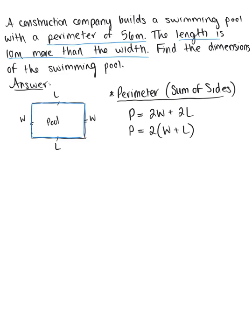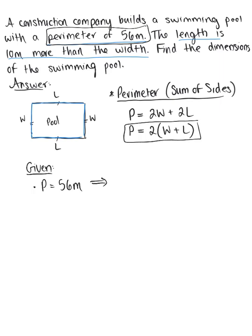Let's think about what we're given. The perimeter is 56 meters, so P = 56. We can set this equal to our general perimeter equation: 2(W + L) = 56.